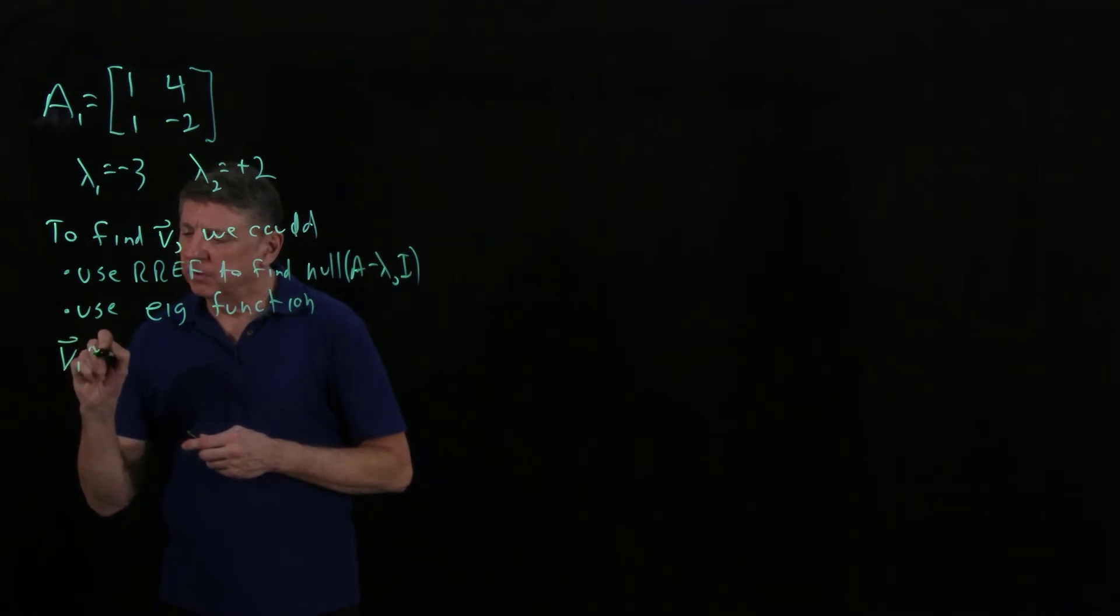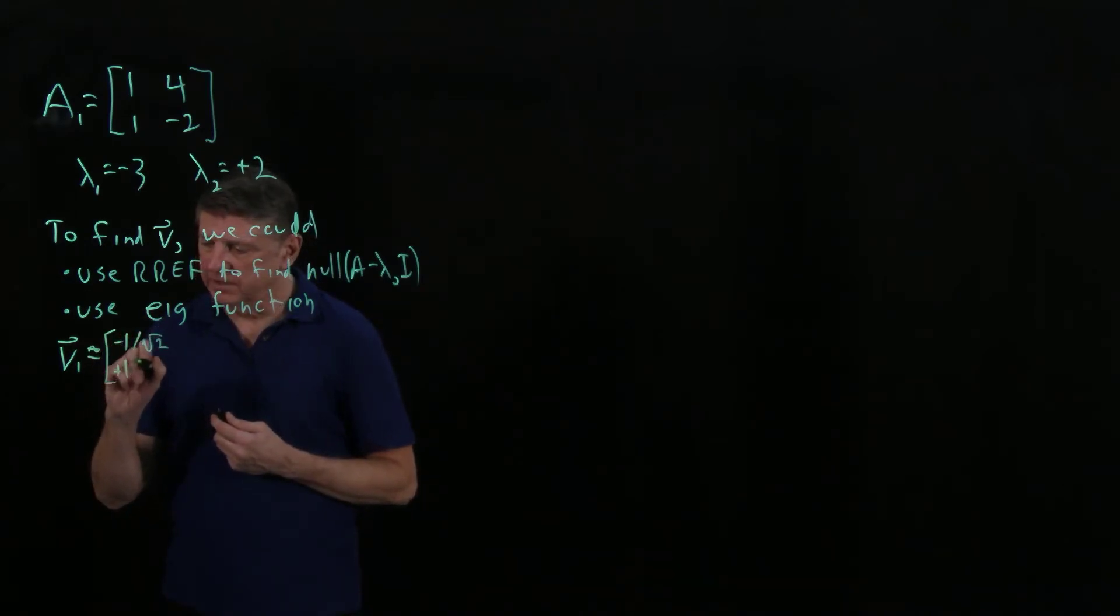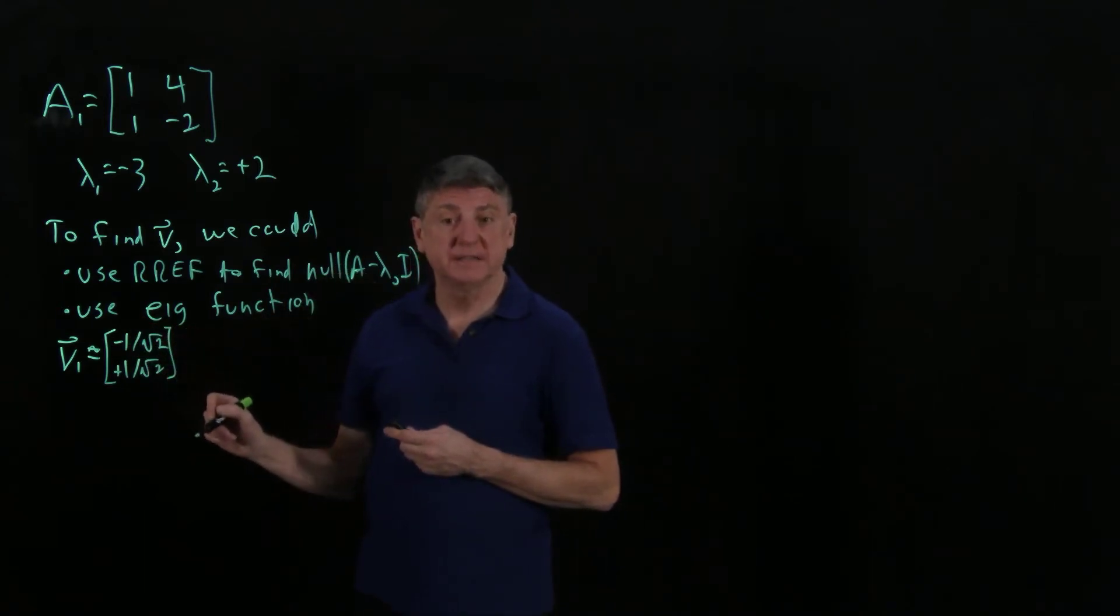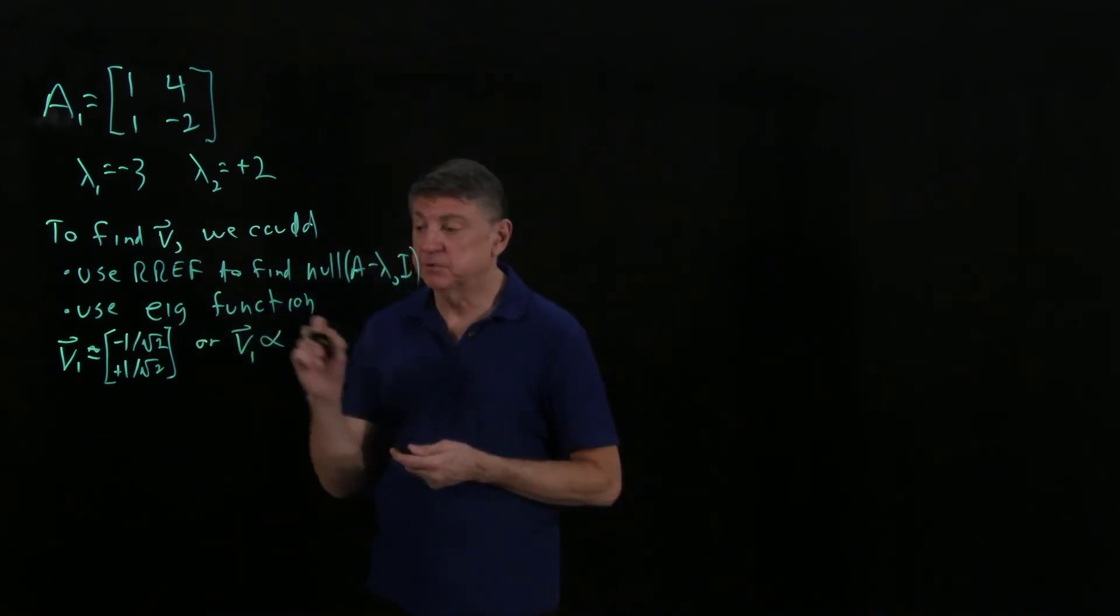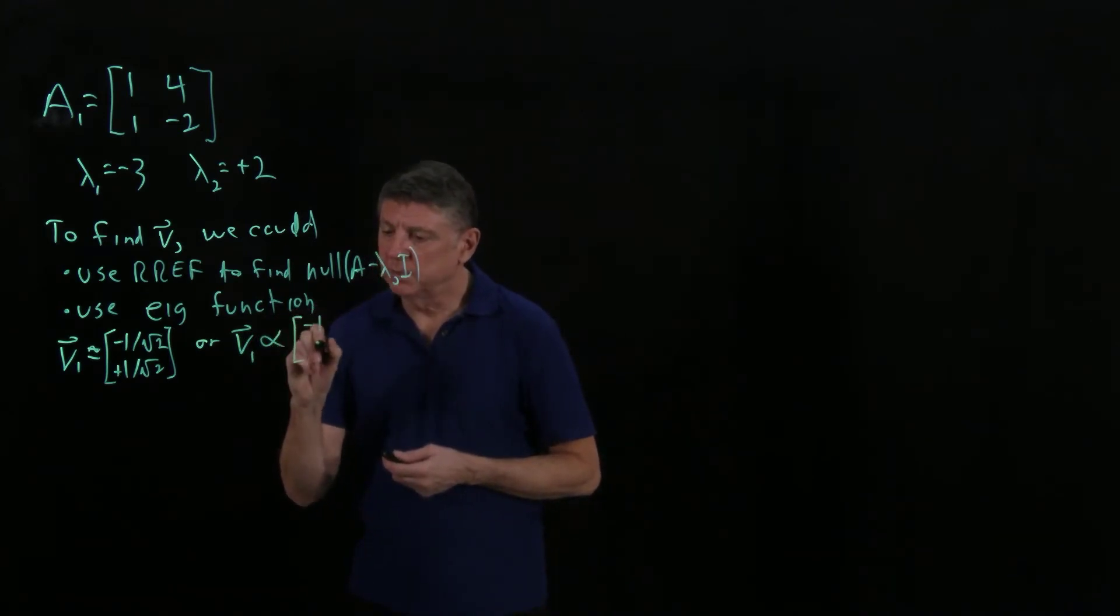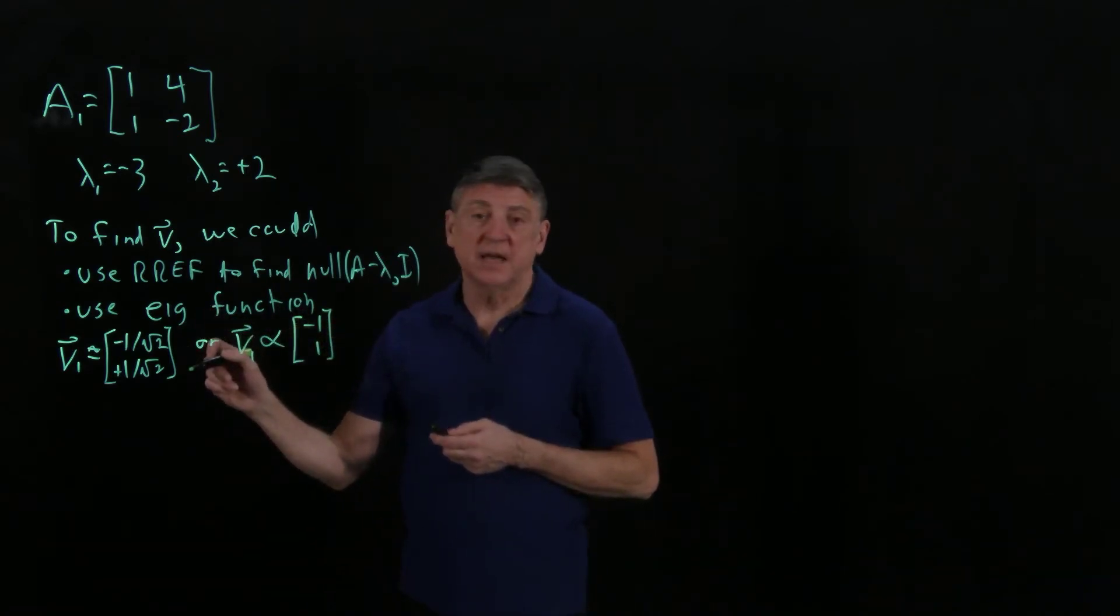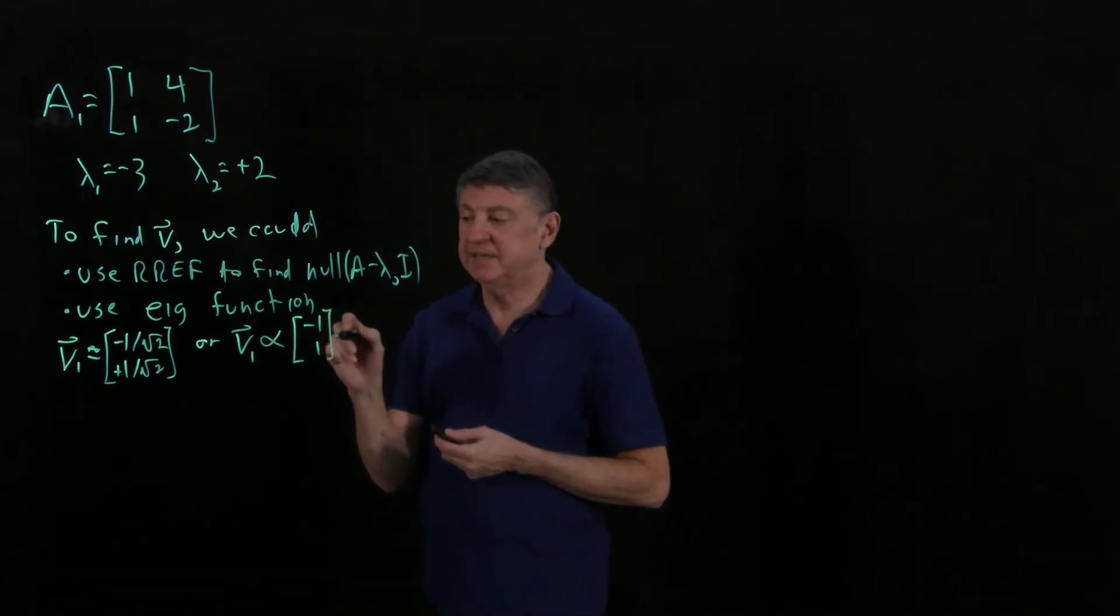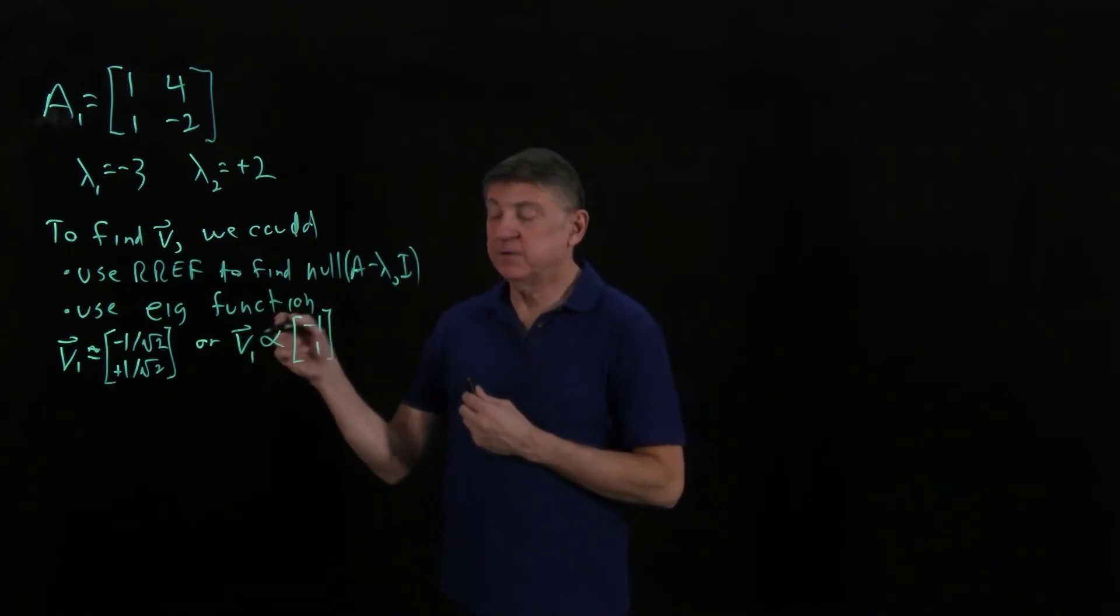When we do this, eigenvector 1, MATLAB will report this as being minus 1 over the square root of 2, and plus 1 over the square root of 2. MATLAB will give you a numerical approximation. If you use null space, you can find this simply, but we could also write that v1, using the proportionality symbol (that's not an alpha, although in my case it sort of looks like it), is proportional to minus 1, 1. This is because an eigenvector is just one example. The standard way to represent an eigenvector is as a vector with unit norm. For human readable purposes, sometimes it's better if we can make it into something like this. I could multiply v1 by any scalar value, and I would still get A times v1 equals lambda times v1.